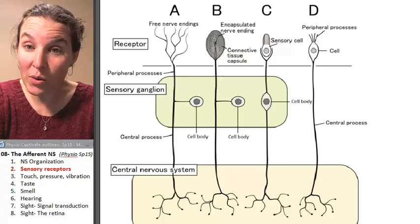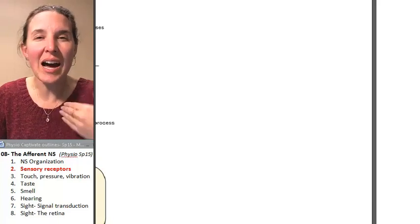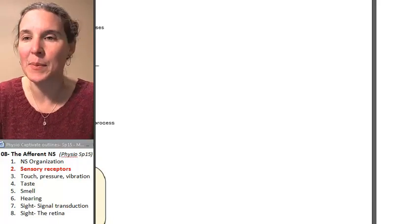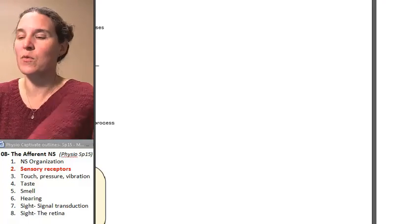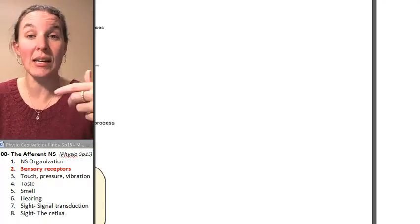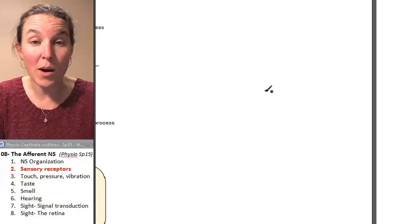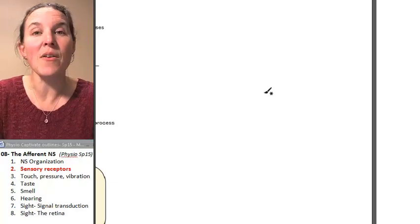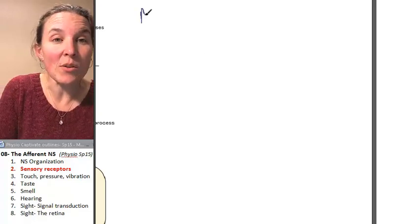Now, we can also categorize our receptors by the kind of stimulus that they pick up. So let's make a list of all the possible types of sensory receptors. What I'm going to tell you is that we're going to go through a bunch of them and look at how they specifically function.